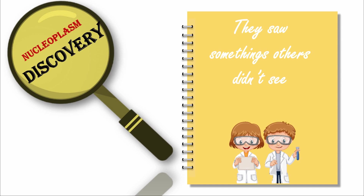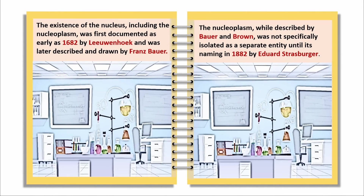Nucleoplasm Discovery — they saw something others didn't see. The existence of the nucleus, including the nucleoplasm, was first documented as early as 1682 by Leeuwenhoek and was later described and drawn by Franz Bauer. The nucleoplasm, while described by Bauer and Brown, was not specifically isolated as a separate entity until its naming in 1882 by Eduard Strasburger.